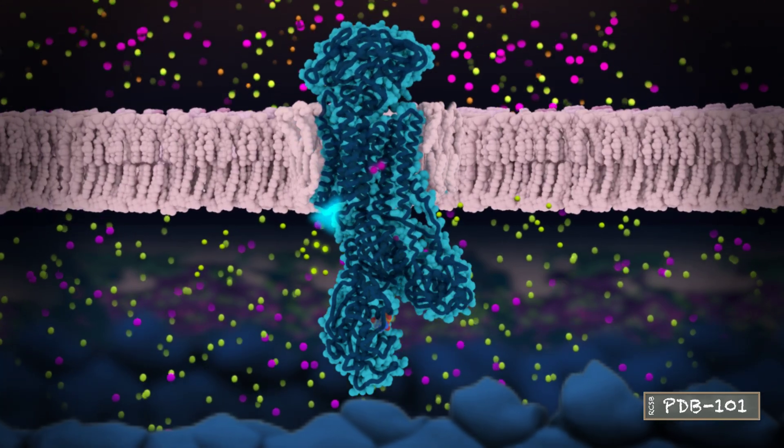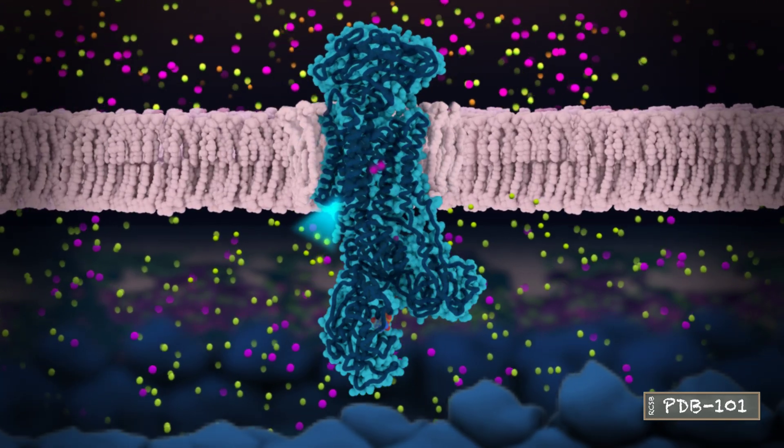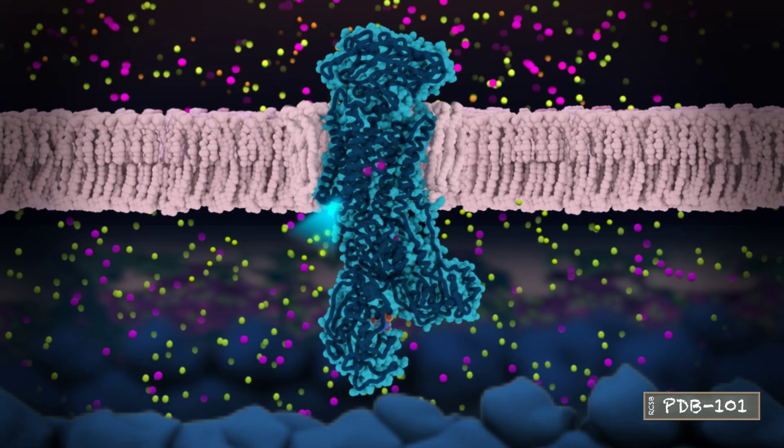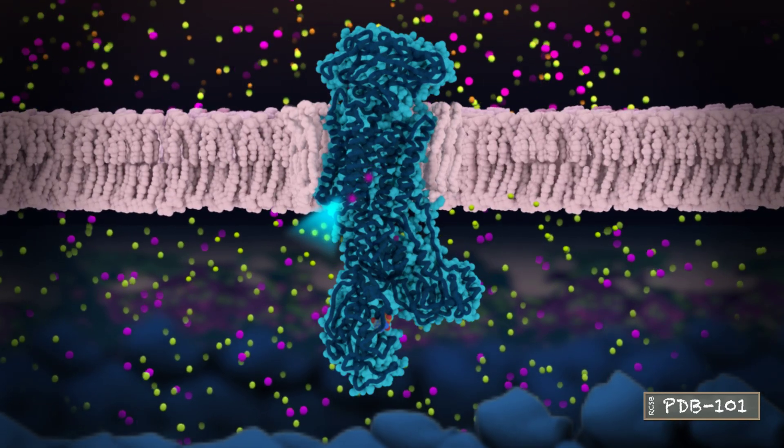As a result of ATP binding, the intracellular gate opens, the potassium ions are released into the cytoplasm, and the cycle can start again.